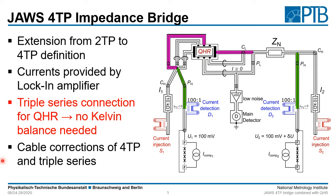Of course we have cable corrections also for this type of connection. The green marked corrections are the four terminal pair definition corrections, and the magenta lines are the cable corrections for the triple series connection.